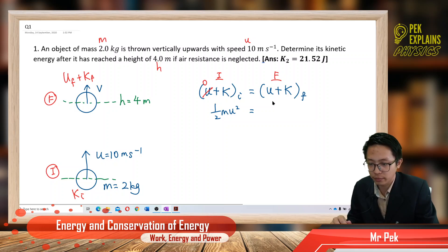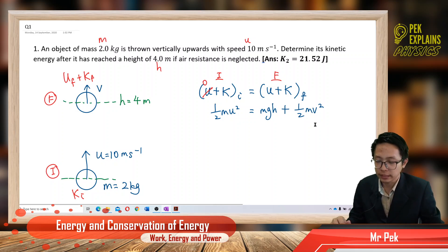So that one is mgh, gravitational potential energy, and the final kinetic energy, half mv square.